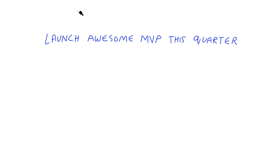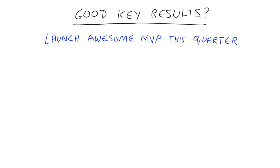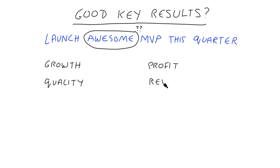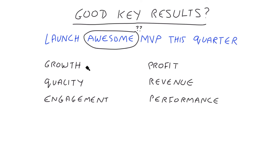Now let's take a look at key results. What do good key results look like? Key results take all that inspirational language and quantify it. You create them by asking a simple question: how would we know if we met our objective? This will force us to define what we mean by awesome. Typically you can have three to five key results — no more and no less. The metrics associated with your key results can be based on things like growth and profit, quality, revenue, engagement, and performance. Notice that some of these metrics are opposing forces — for example, you can cut back on profit to focus on growth, or cut back on quality to focus on revenue — and the key results can be used to help balance such opposing forces.